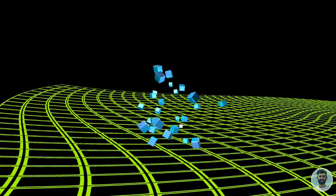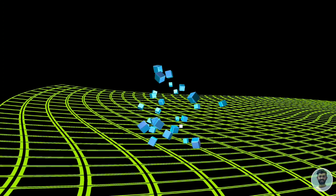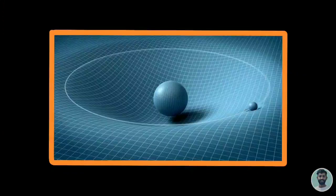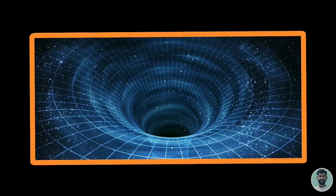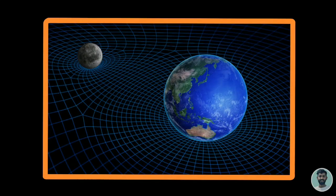So now every object in the universe moves in space time. This space time can be warped or distorted by the massive objects. Like black holes distort the space time to its extreme level. Sun earth and moon also distort the space time.